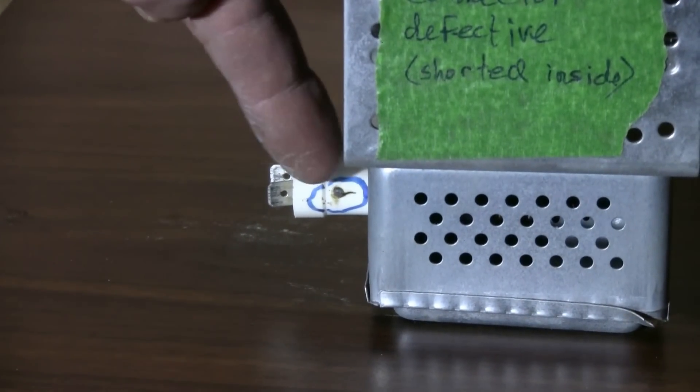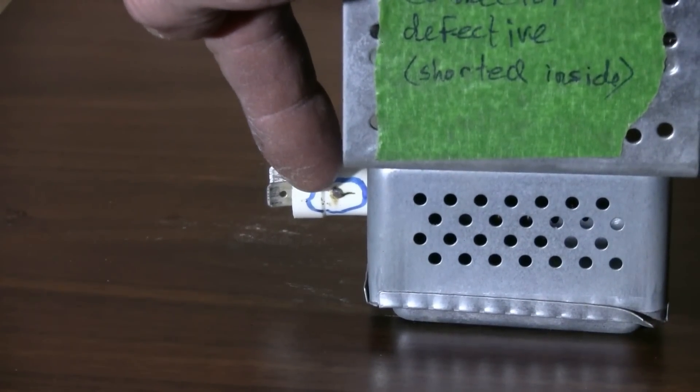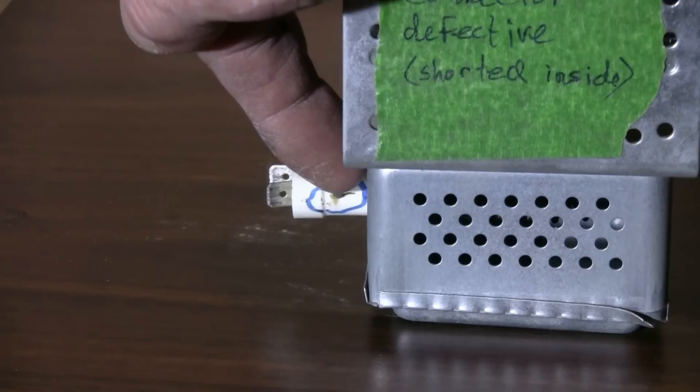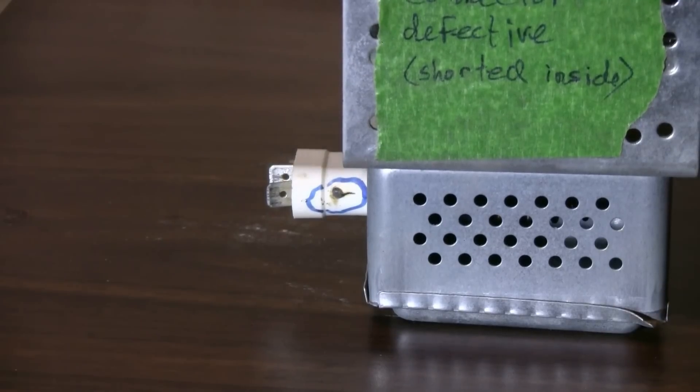connector—there's a short right there where it's burned through this insulator and it just shorts to the body of the magnetron.